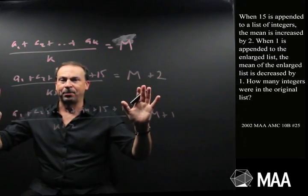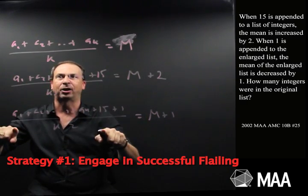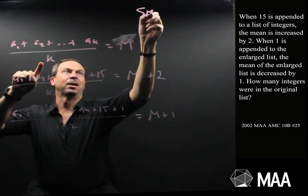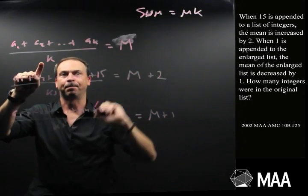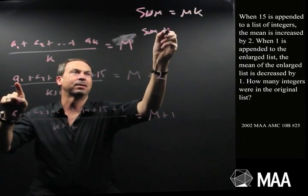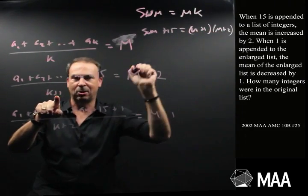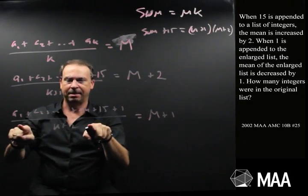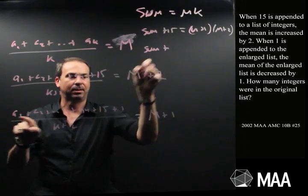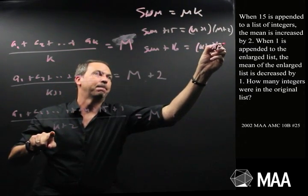Well, I feel like I can do something. Strategy number one, engage in successful flailing. Just do what feels right and hopefully it all falls into place. I've got all these fractions. I can see this sum divided by k is m. That tells me if I multiply by k, the sum is mk. If I do the same thing here, multiply by k plus 1, this tells me that the sum plus 15 is k plus 1 times m plus 2. And this one, multiplied by k plus 2, I've got the sum I had before plus 15 plus 1, plus 16, is k plus 2 times m plus 1.